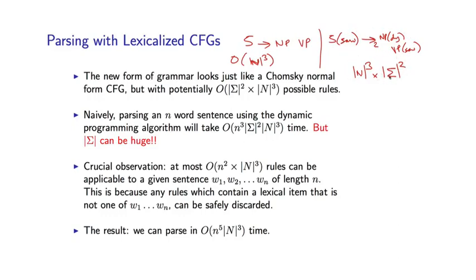Naively, you can just pick up the dynamic programming algorithm we saw for probabilistic context-free grammars and apply it to this new grammar. These rules are really just like regular context-free rules. We can just treat these as non-terminals. We just have a much larger set of non-terminals than we had before.